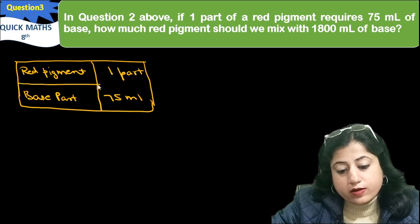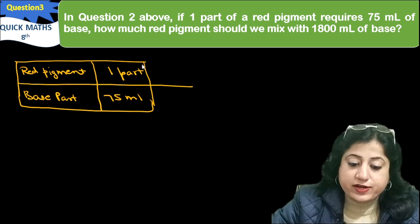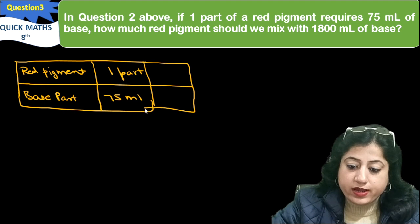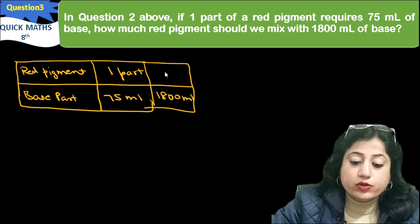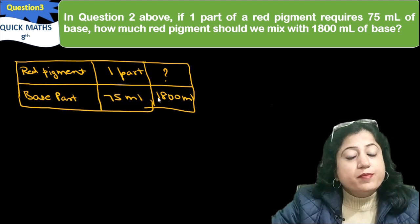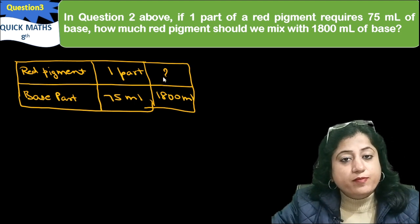Now, we are asking how much more red pigment should be. So the red pigment is not known, but the base is 1800 ml. We don't know this. Red pigment is asking how many parts of red pigment should be.